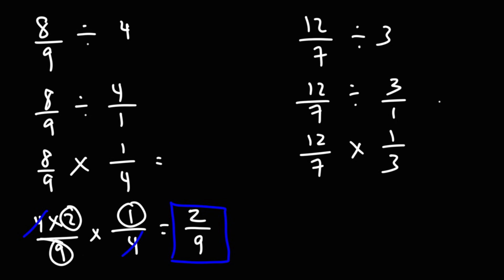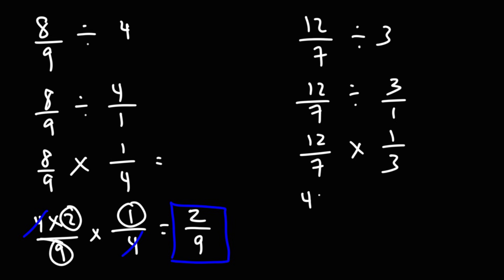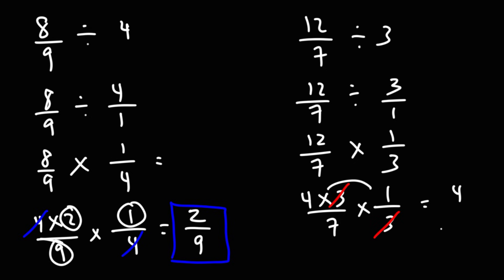So now, before we multiply across, notice that 12 is divisible by 3. So I'm going to write 12 as 4 times 3, and we could cancel a 3. Multiplying across, I have 4 times 1. When you cancel a 3 there's a 1 here, so you have 7 times 1, which is 7. So the final answer for this one is going to be 4 over 7.